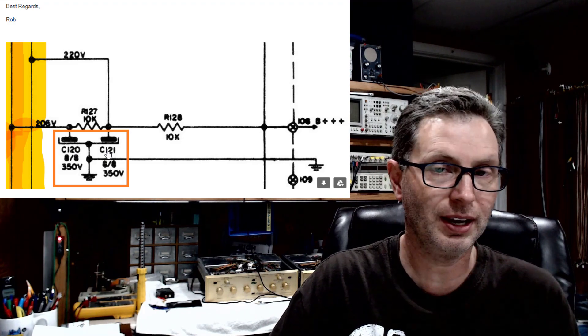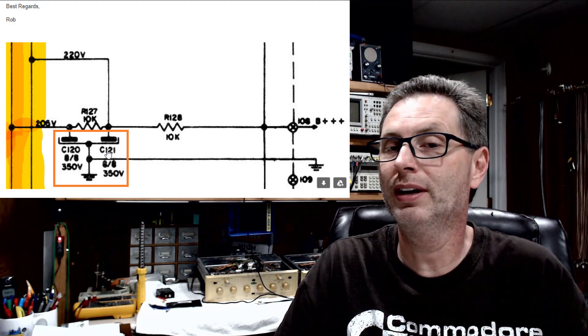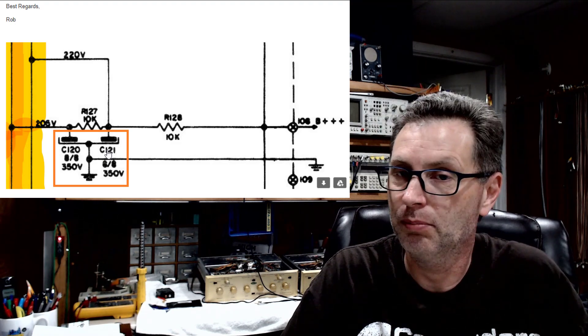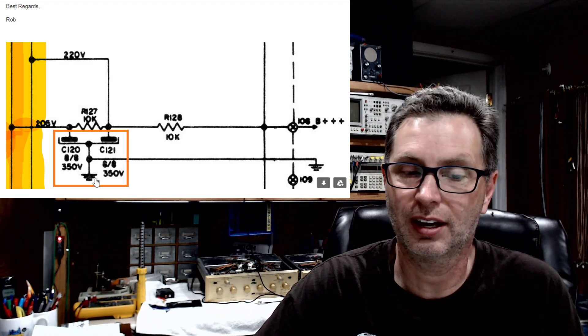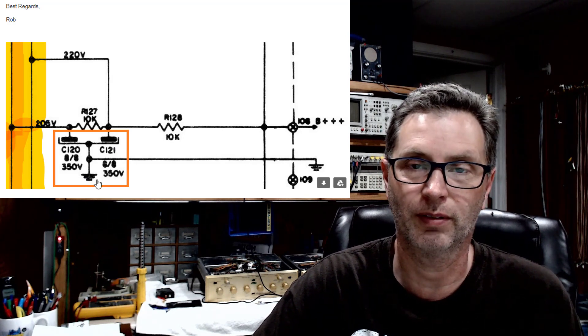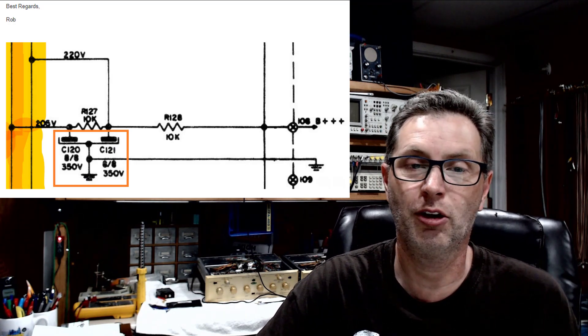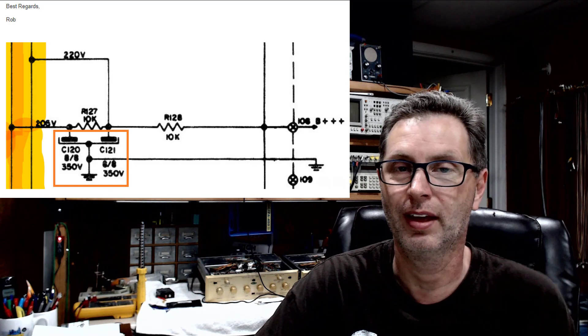If you don't want to replace it with a can cap and you just wanted to use two individual standalone 8 microfarad capacitors, you could. You would just twist the negative leads together and tie them off to ground here. Hope this makes sense and I hope it explained what you are looking for. Thanks everyone!